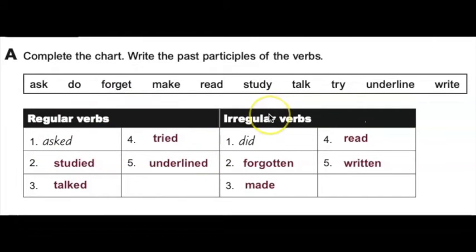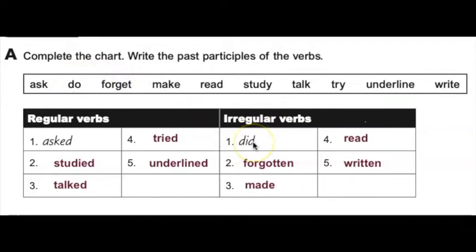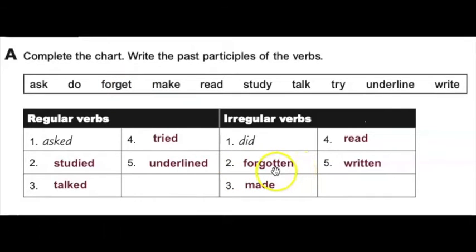The irregular past participles are as follows. Number one, do becomes did. Number two, forget becomes forgotten. The simple past is forgot but the past participle is forgotten.